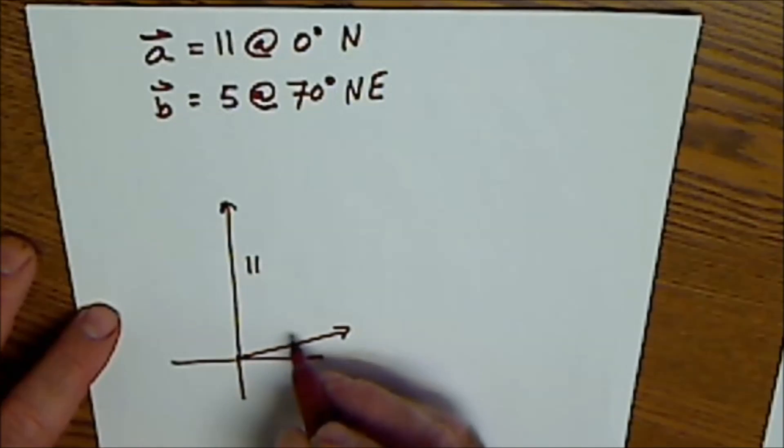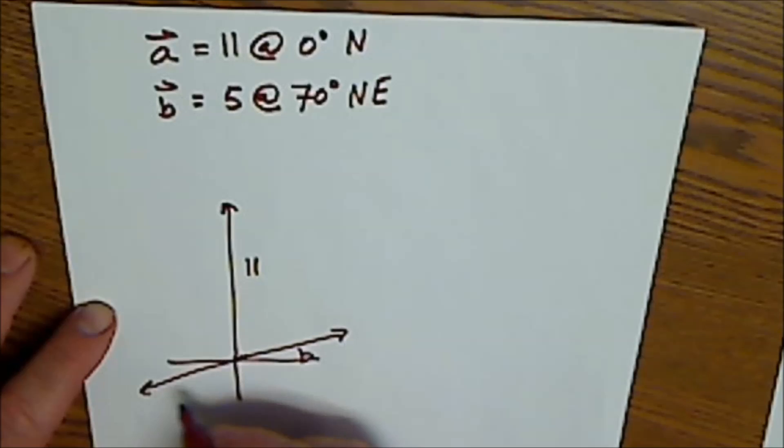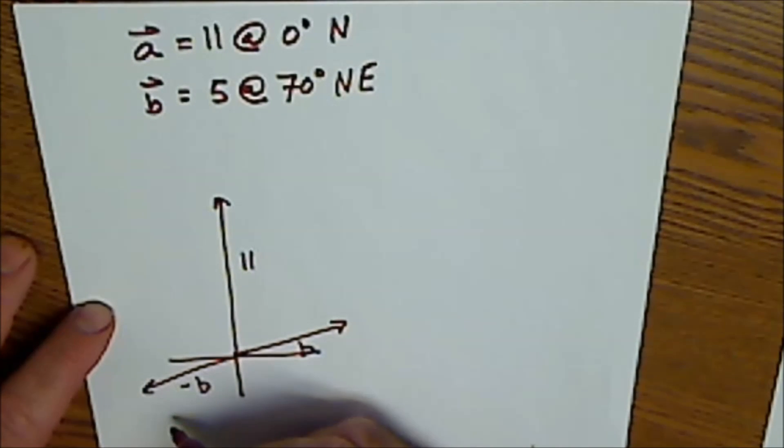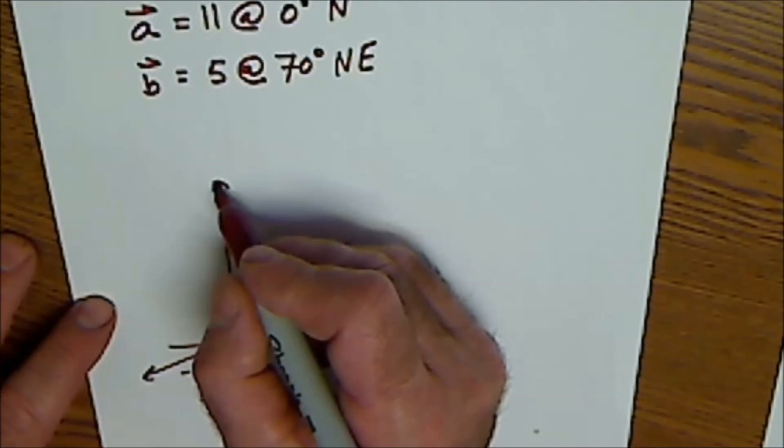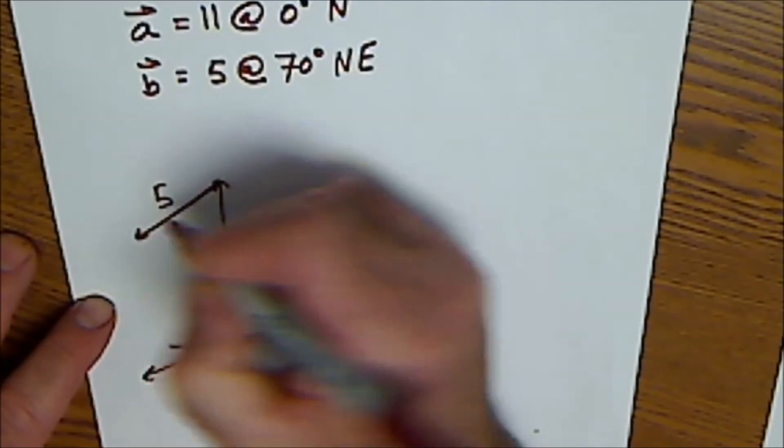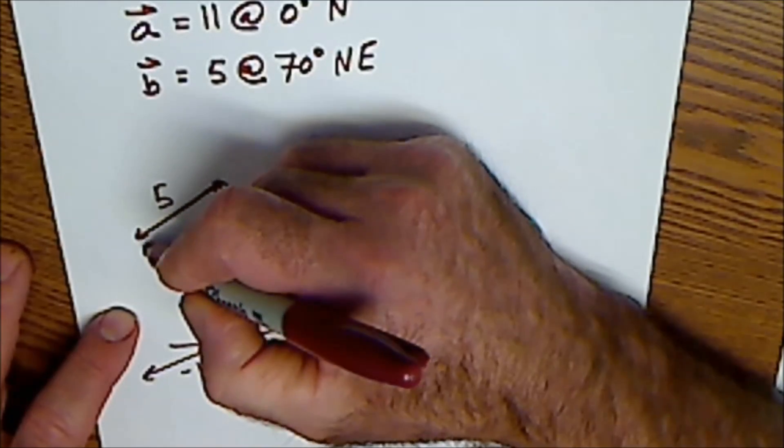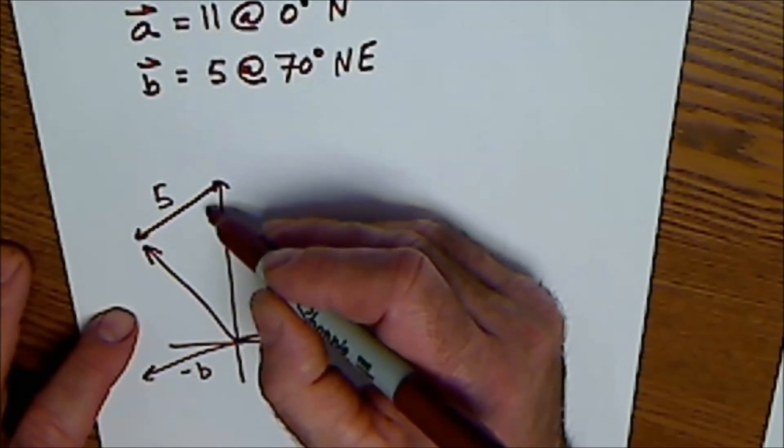So if this is B, this is negative B. Still 5 units long, but in the opposite direction. So I'm going to transpose negative B up here. It's 5 units long. My resultant vector goes from the tail of the first to the tip of the second, but I have to figure out this angle here.